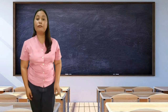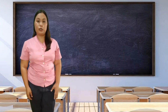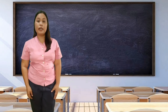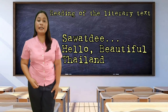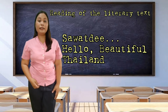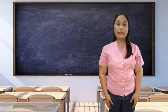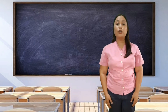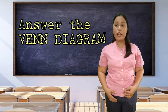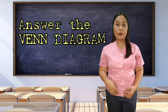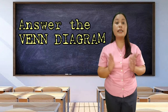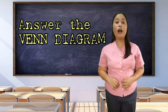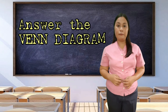Now students, let us have the first part of the module, which is the reading of the literary text entitled 'Sawat Di, Hello Beautiful Thailand.' After reading the literary text, you are going to answer in the form of a Venn diagram which shows the similarities and differences of Thai culture and the Philippines.